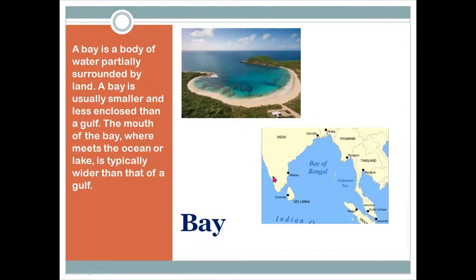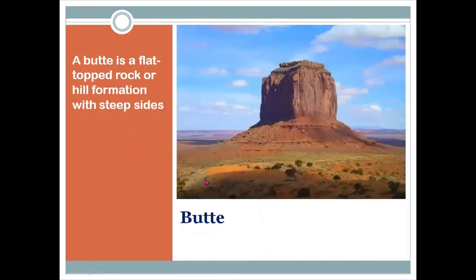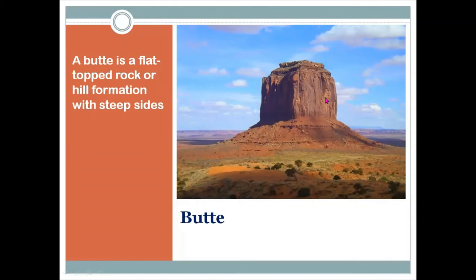There is another physical feature called the butte. A butte is a flat-topped hill or hill formation with steep sides. It is a feature which has height, but the top is flat or smooth and the sides are steep. So any rock formation where the top is flat and the sides are steep, we call that a butte.